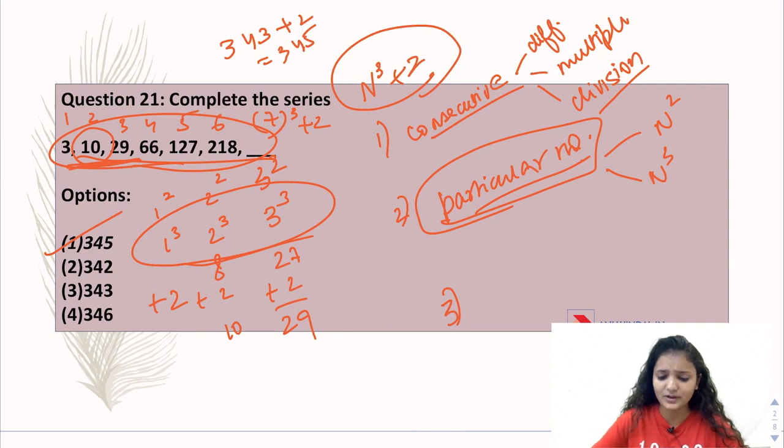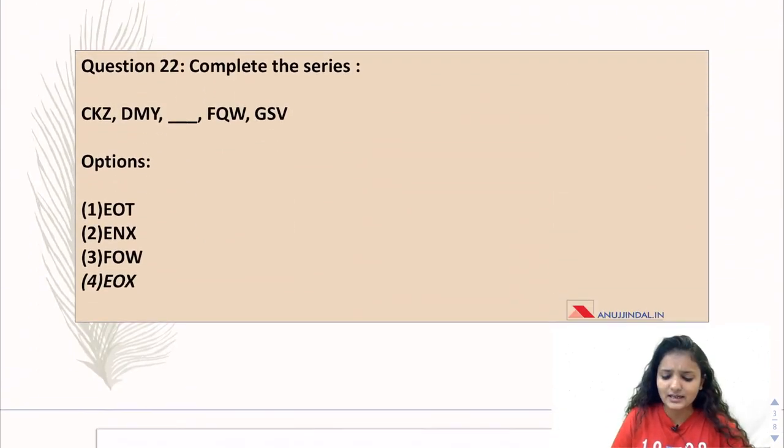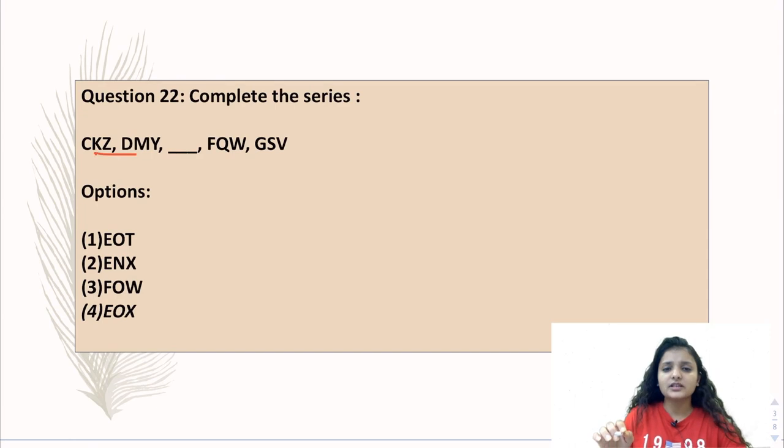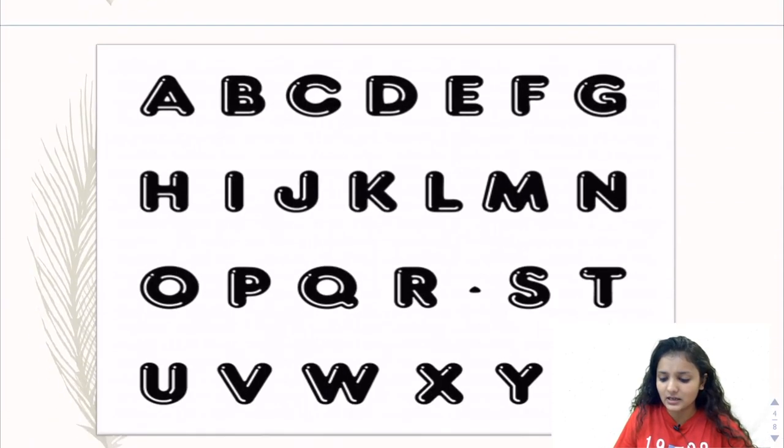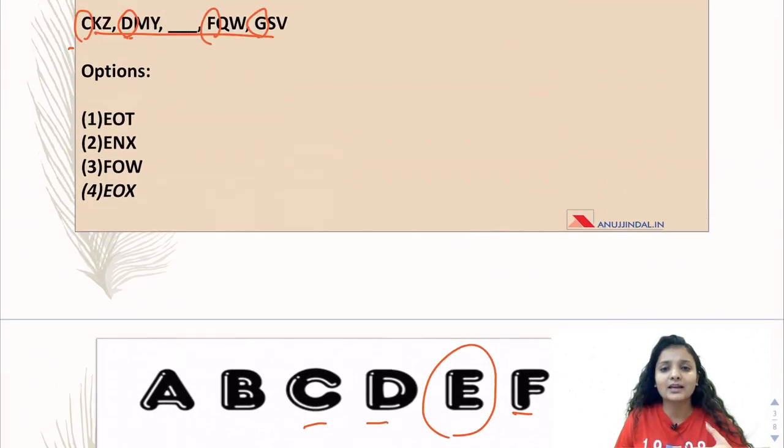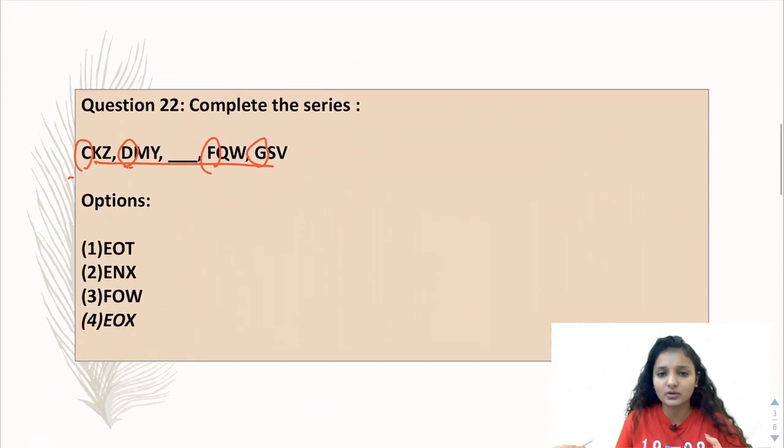Then we come to question number 22. This is a letter series. To solve the letter series, if you have multiple letters, compare each first place of letters. You can see CD-FG. The missing one is in a straight line. Consecutively, the letter is missing. So this will start with E.